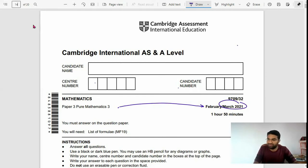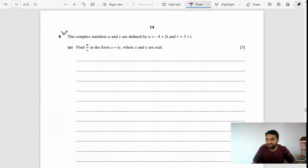We'll move on to question number eight on complex numbers. The question says that complex numbers u and v are defined by u equals negative 4 plus 2i and v equals 3 plus i. Find u over v in the form x plus iy where x and y are real numbers.